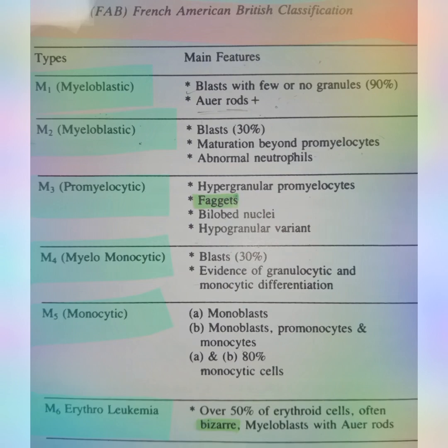Now I am going to tell you about the six classifications. As you can see, it is divided into types with their features. The first is myeloblastic - in myeloblastic we can see that these are the immature leukocytes, so you will only see the blast cells.